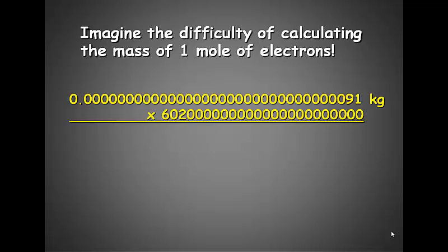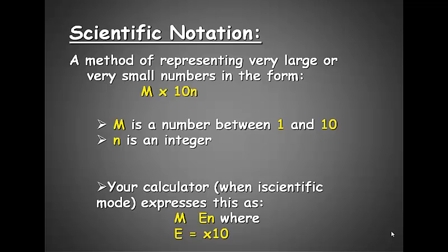I don't even think your calculator would be able to handle that type of calculation. This is why we use scientific notation. Scientific notation is a method of representing very large or very small numbers in a standardized form. That form is m times 10 to the n, where m is a number between 1 and 10, and n is a whole number integer.